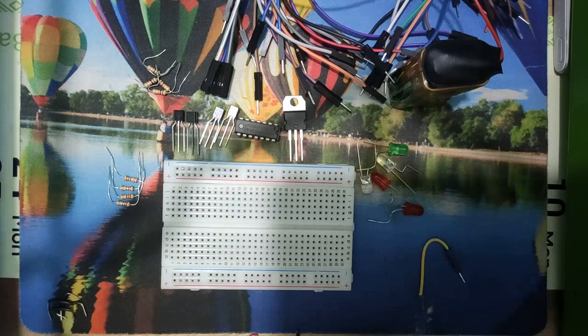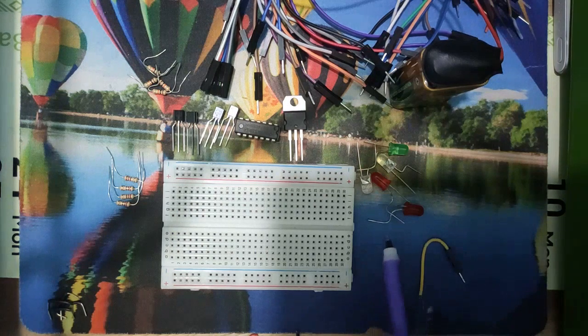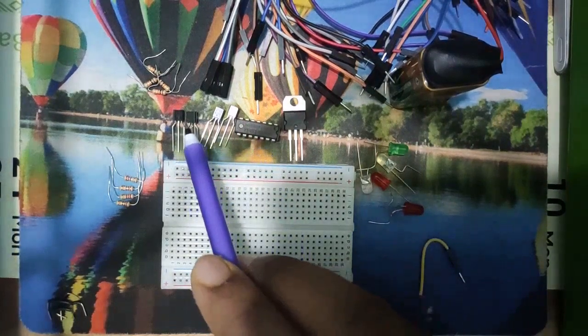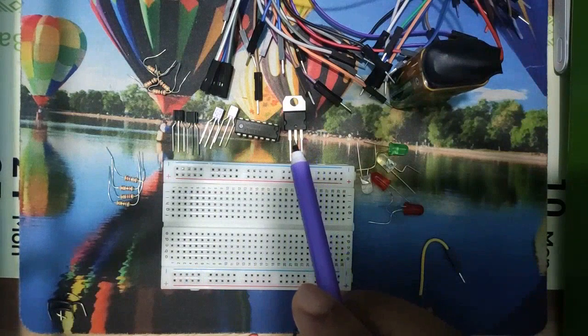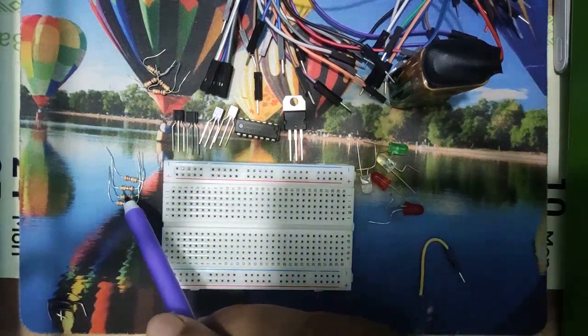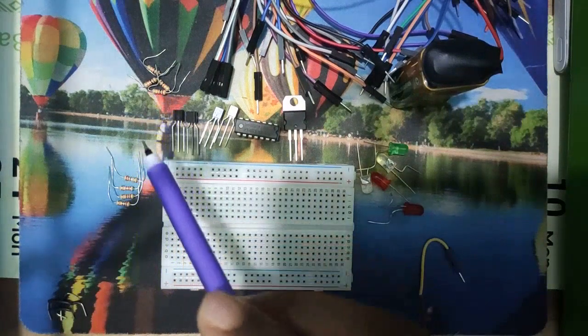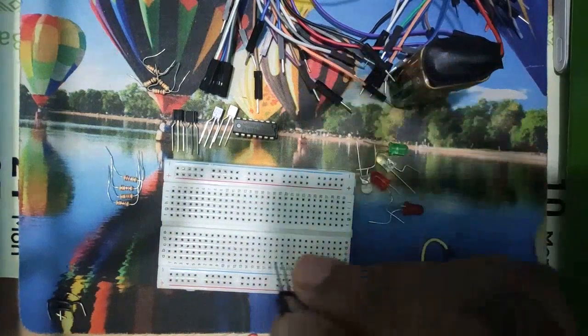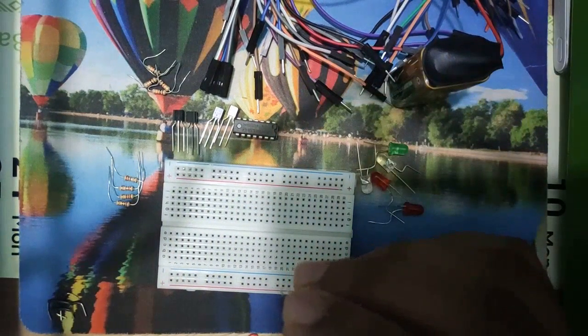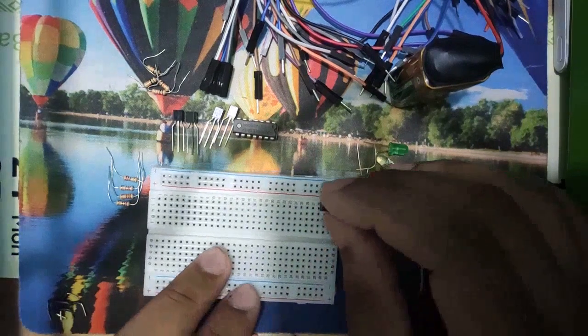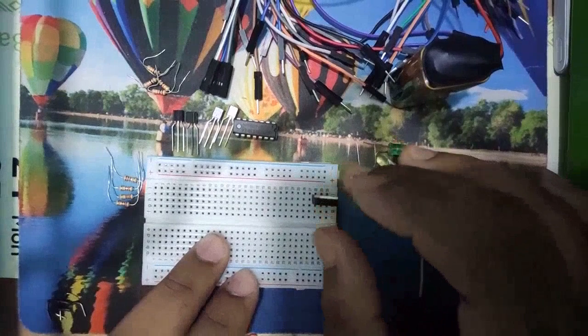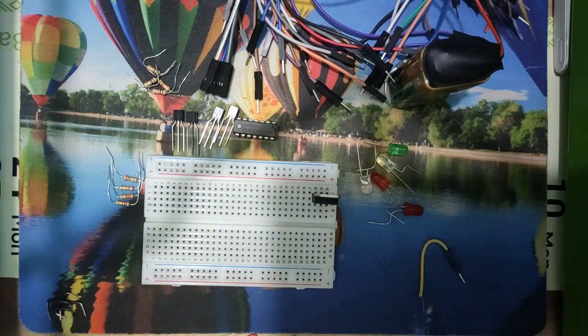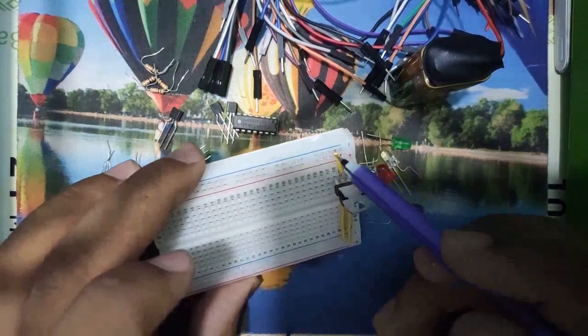For implementation, we will need some components. At first, place the voltage regulator to convert the 9 volt battery to 5 volt. Diagram for connecting 9 volt to 5 volt is on the screen. Now it will be the 9 volt input, these are the common ground, and this will be the 5 volt output.